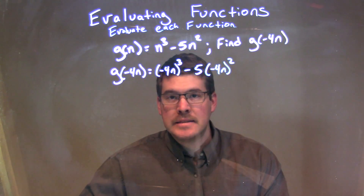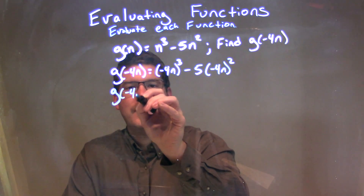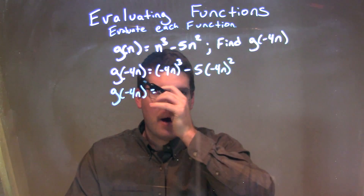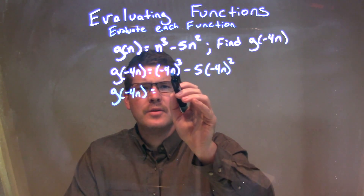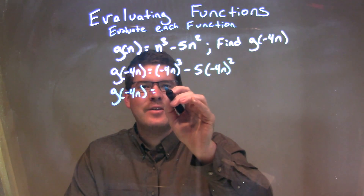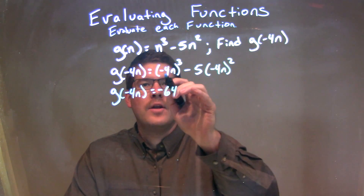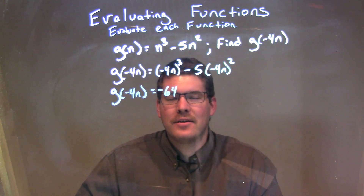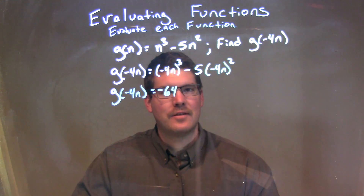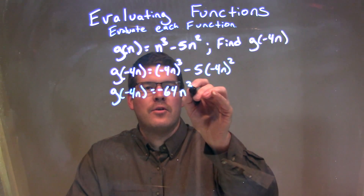Now we need to simplify this. g of negative 4n — we'll rewrite that down here — is equal to negative 4n to the third power. Negative 4 to the third power is negative 64, because negative 4 times negative 4 is positive 16, and positive 16 times negative 4 is negative 64. The third power also applies to n, so we have n to the third power.